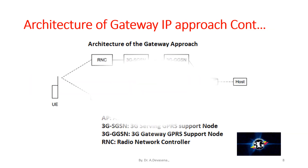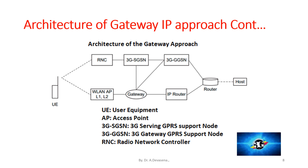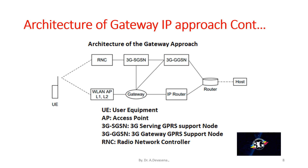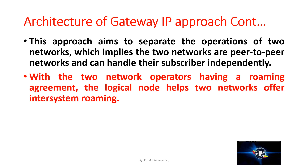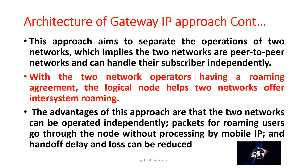Here is a representation of the architecture of the gateway approach. In between the wireless LAN and the host, we have connected a gateway. This gateway IP approach aims to separate the operations of the two networks, which implies the two networks are peer-to-peer networks and they can handle their subscribers independently. With the two network operators having a roaming agreement, the logical node helps the two networks offer inter-system roaming. The advantage of this approach is that the two networks can be operated independently, and packets for roaming users go through the node without processing by mobile IP, so handoff delay and loss can be reduced.